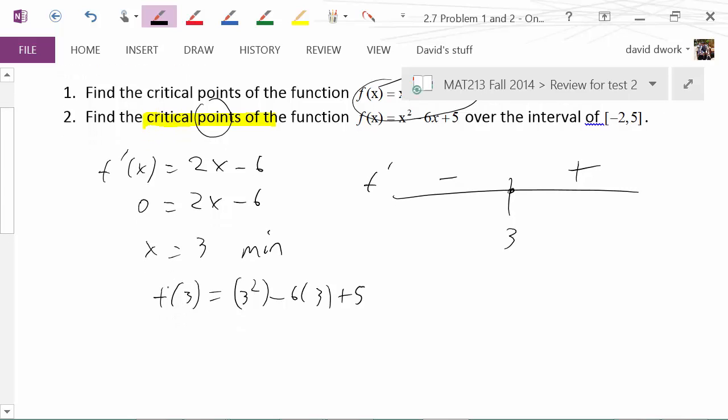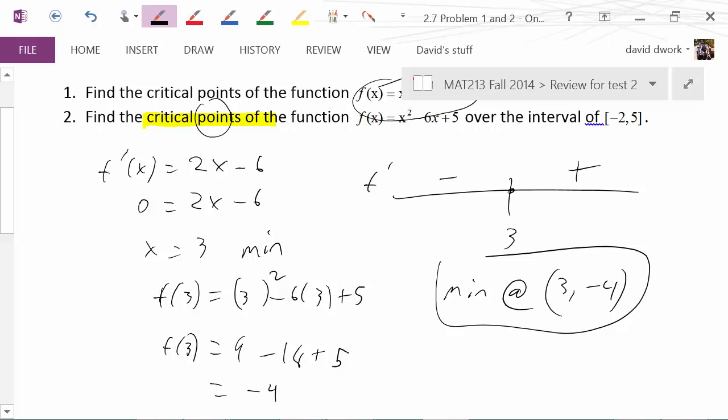The word point means we need an x and a y value. So what we're going to need to do is now take our x value, substitute it back into the original equation, and let's find the y value. So I'm going to substitute that in. What do we get here? 3 squared is 9. 3 squared is 9 minus 18 plus 5. Therefore what do we get? Negative 9 plus 5, negative 9 plus 5 is negative 4. Therefore I know I have a minimum at 3, negative 4. That's part 1, that's question 1.